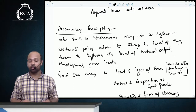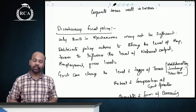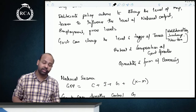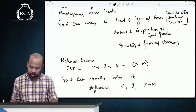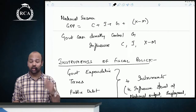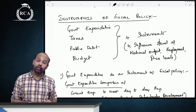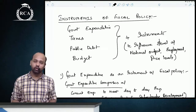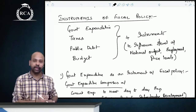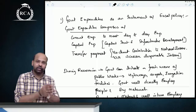Discretionary fiscal policy refers to deliberate policy actions to influence the level of expenditure — national output — through changes in expenditure and taxes. The government can change the level and types of taxes, the extent and composition of government expenditure, and the quantity and form of borrowing. Since GDP equals C + I + G + X − M, the government can directly control government expenditure while indirectly influencing consumption, investment, and net exports. There are four instruments of fiscal policy: government expenditure, taxes, public debt, and budget.